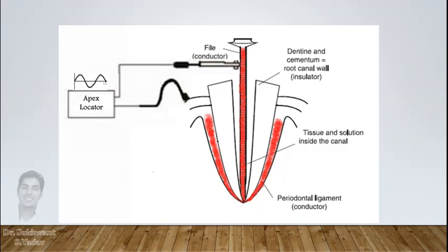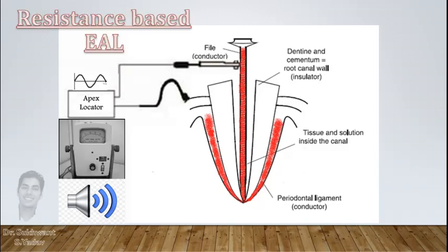As this resistance is equal to the resistance at lip clip which is placed on oral mucosa, a beep sound is generated. That indicates apex. Then reduce 0.5 mm from this length and that will be final working length. This is the principle of first generation apex locators.